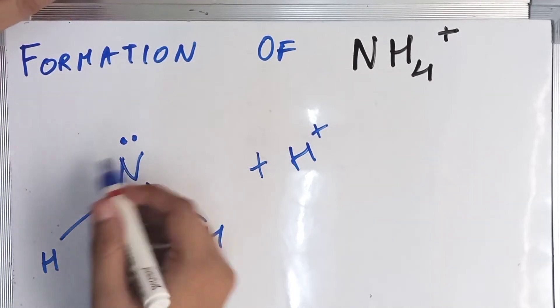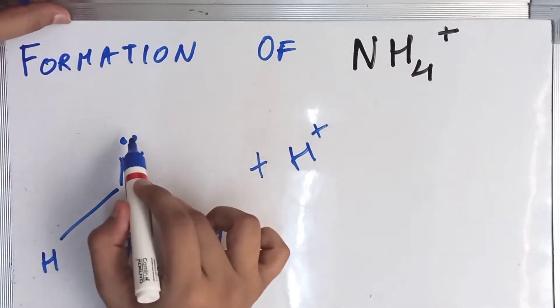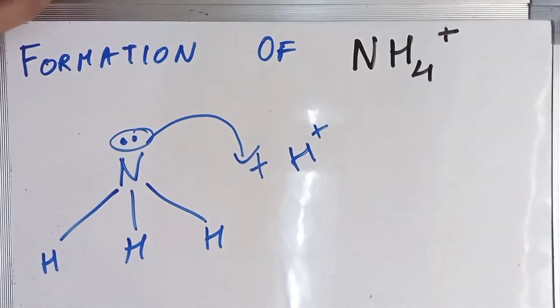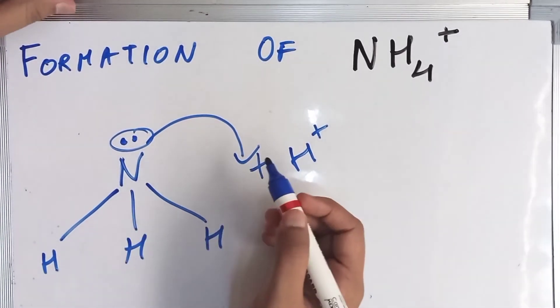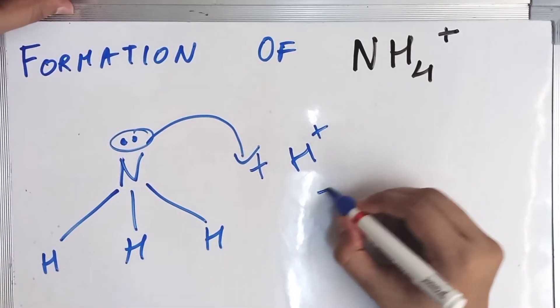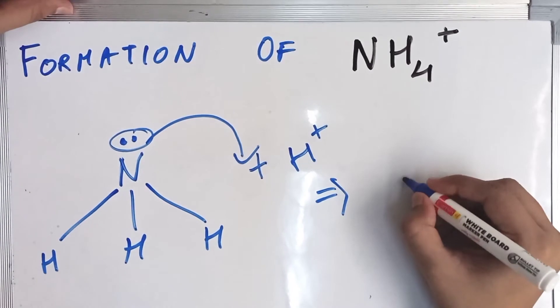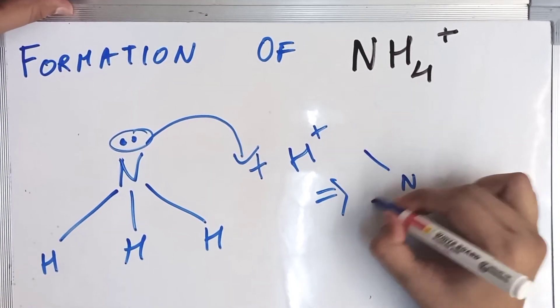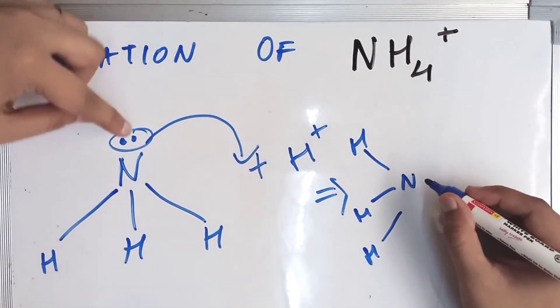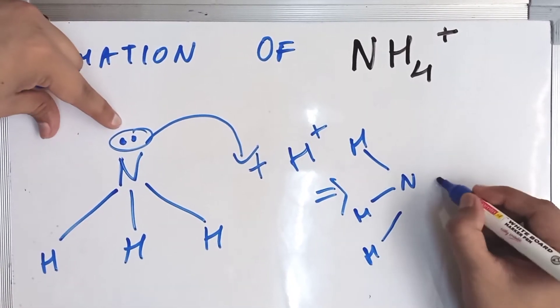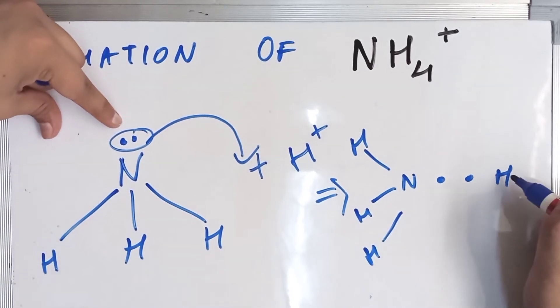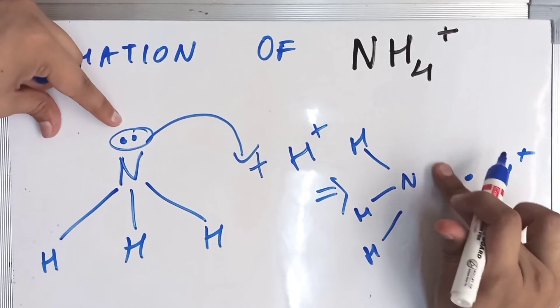What N from the NH3 does is that it donates its two electrons for a bond formation, and this bond formation is essentially a coordinate bond. So it is like this: N-H-H-H and the two lone electrons, and this is H+.